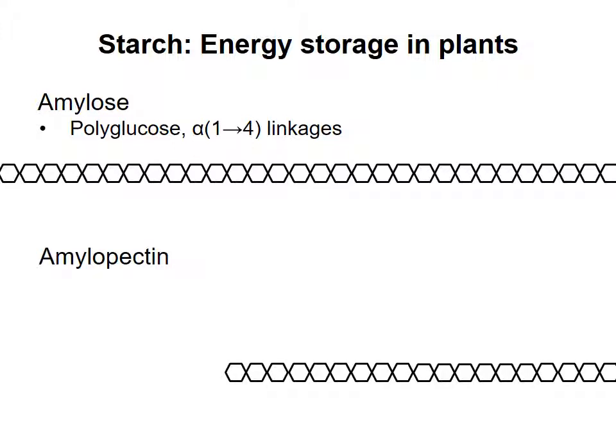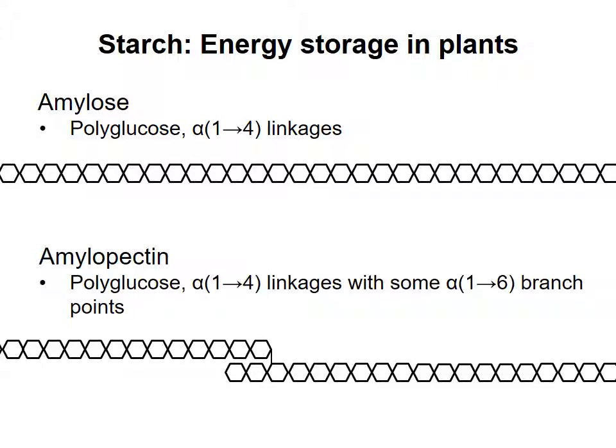Amylopectin makes up 70 to 80% of starch. Like amylose and glycogen, amylopectin contains glucose in alpha-1,4 linkages. Unlike amylose, amylopectin has branch points every 24 to 30 glucose units, at which another glucose is attached via an alpha-1,6 linkage. This is the same type of branch point as is found in glycogen, but there are fewer branch points in amylopectin than in glycogen. Amylose and amylopectin are found together in semi-crystalline starch granules.